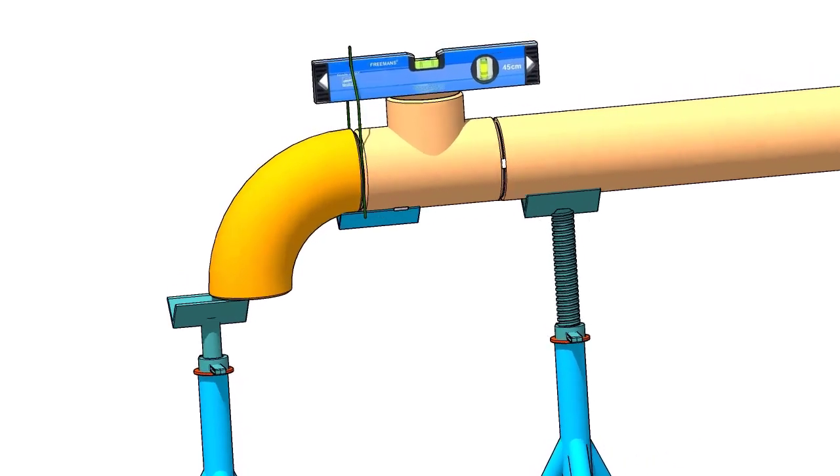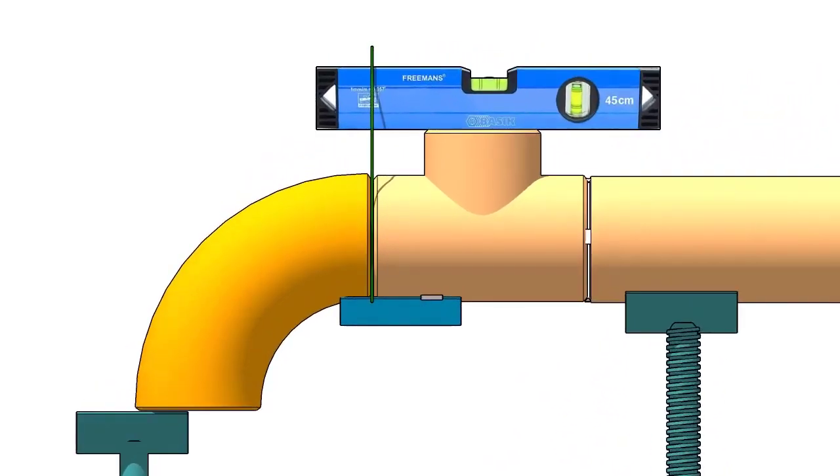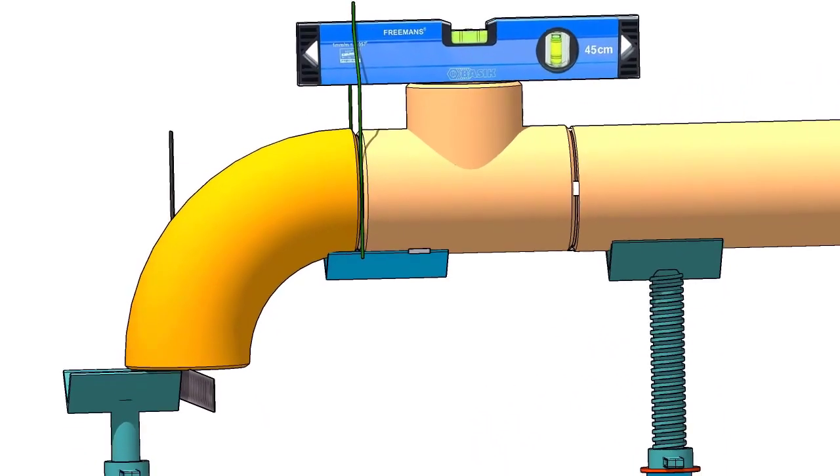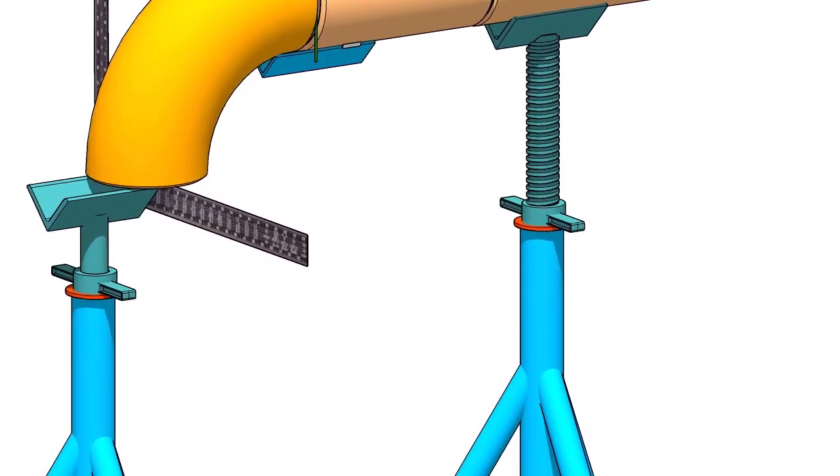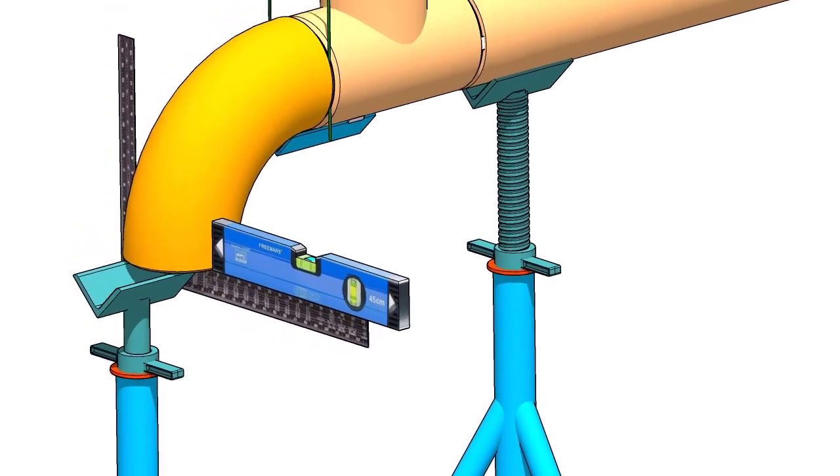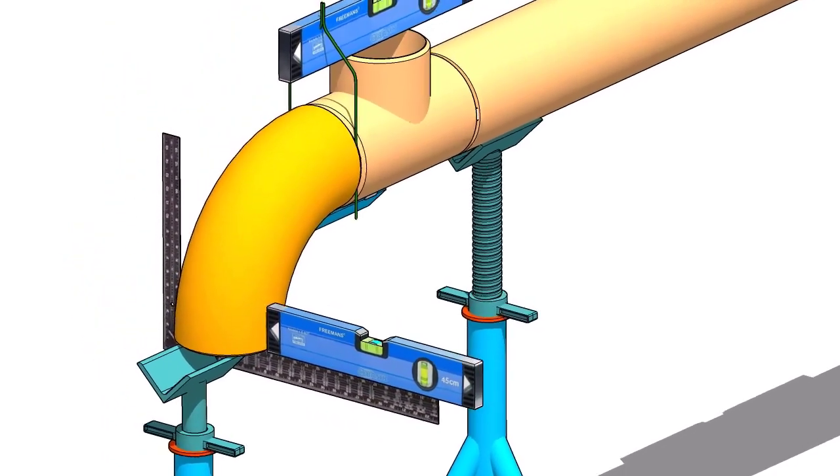Hold a large right angle or a straight edge below the elbow face firmly. Put a level bottle on the right angle as shown. Rotate the elbow to make the face level. Tack weld on both sides of the elbow with the tee.